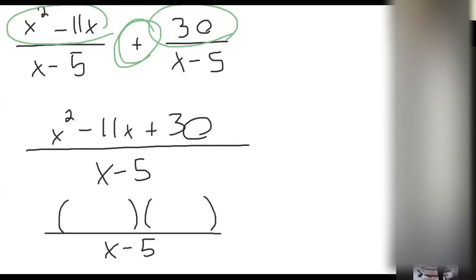Usually when you see a trinomial like this, you're going to factor. So we need to factor the trinomial. And the reason is when we factor that trinomial, we're hoping that something in the numerator is going to cancel with something in the denominator. So I'm looking, when I factor, I'm looking for an x minus 5.